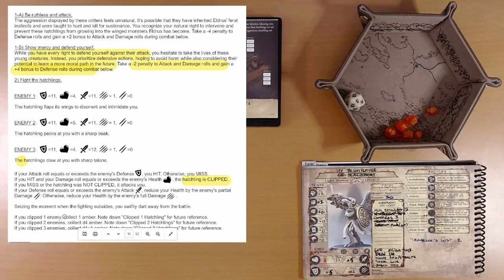If you hit and your damage roll exceeds the enemy's health, the hatchling is clipped. Clipped one hatchling. If you hit and your damage roll exceeds the enemy's health, the hatchling is clipped.